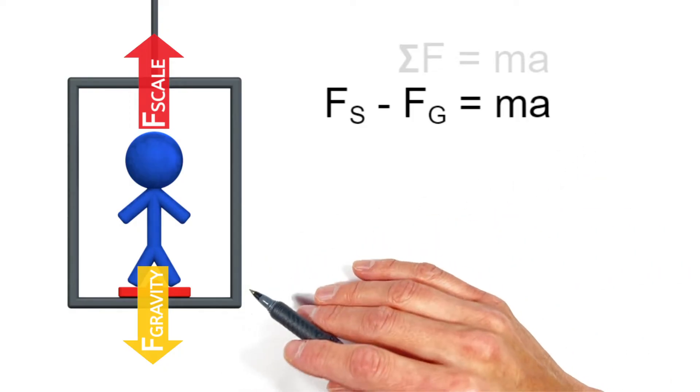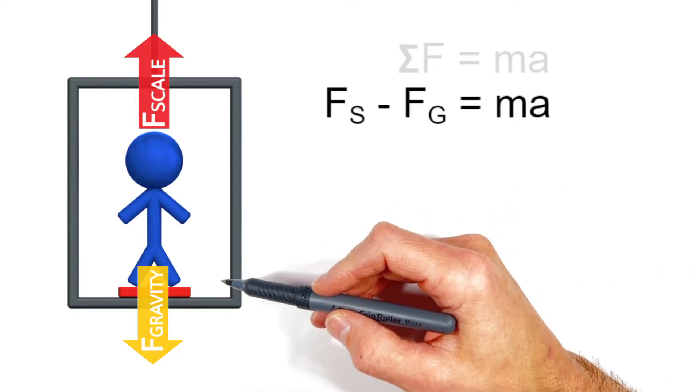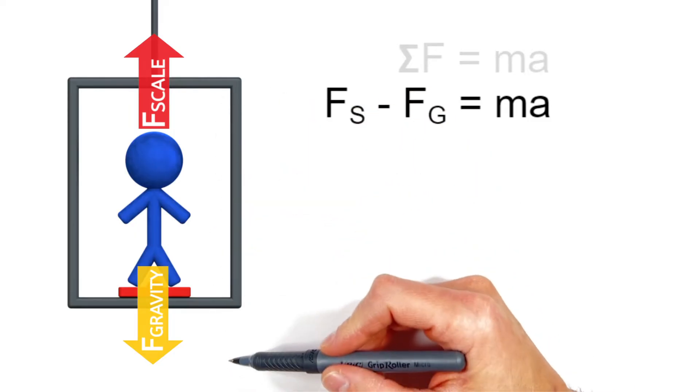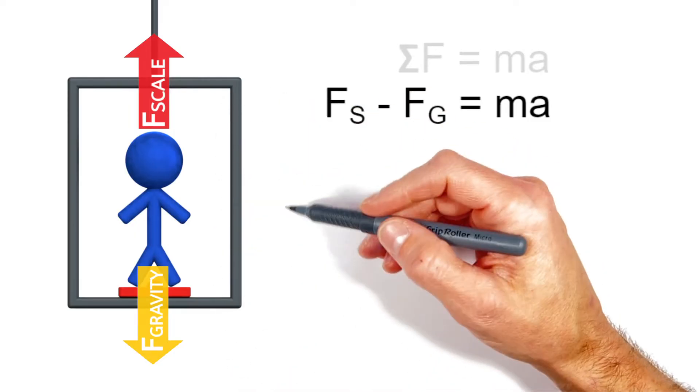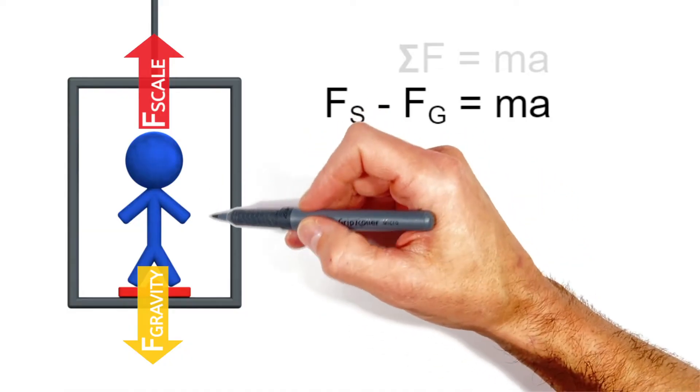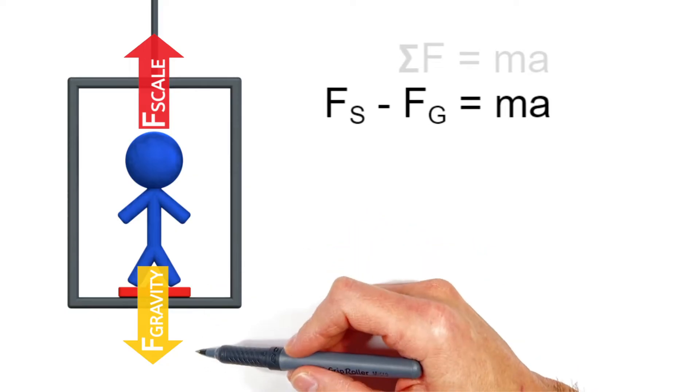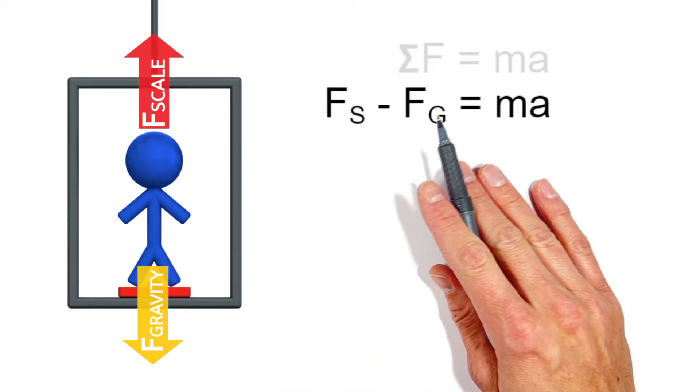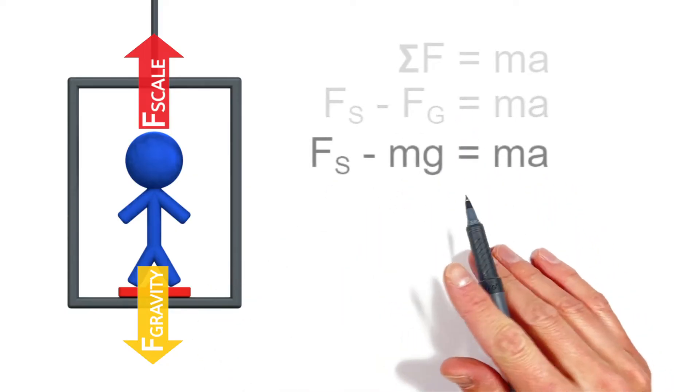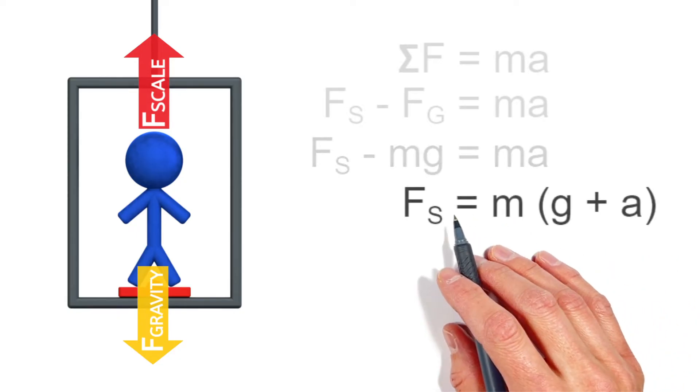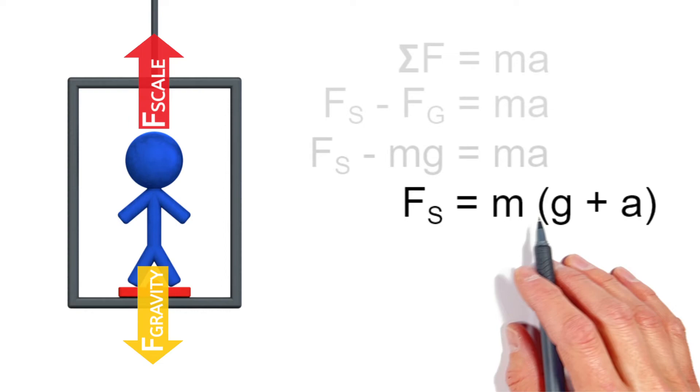Now force is a vector, meaning direction matters, so we have to make a distinction between forces up and forces down. So if we say up is the positive direction, this upward force by the scale is positive and the downward force by gravity is going to be negative. And rearranging this leaves us with an equation that relates the reading on this scale to the acceleration of the person in the elevator.